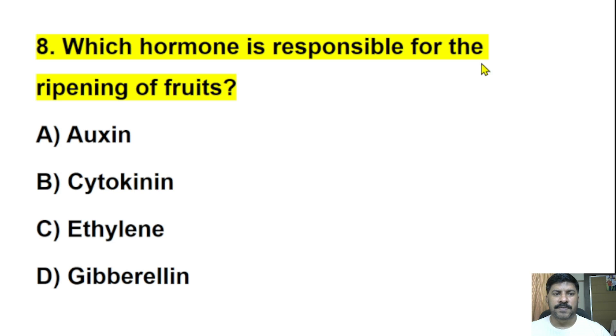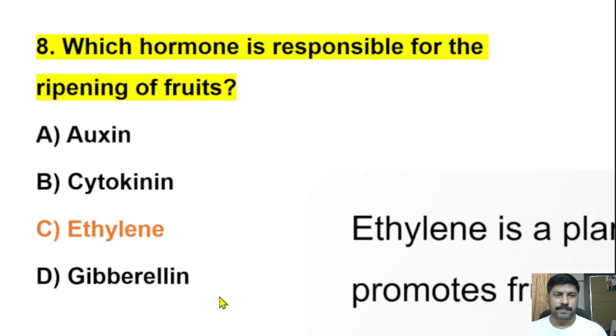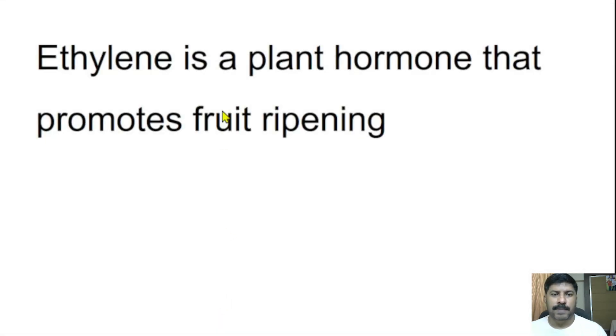Eighth question: Which hormone is responsible for the ripening of fruits? Auxin, cytokinin, ethylene, or gibberellin? The correct answer is ethylene. Ethylene helps in the ripening of fruits. Ethylene is a plant hormone that promotes fruit ripening.